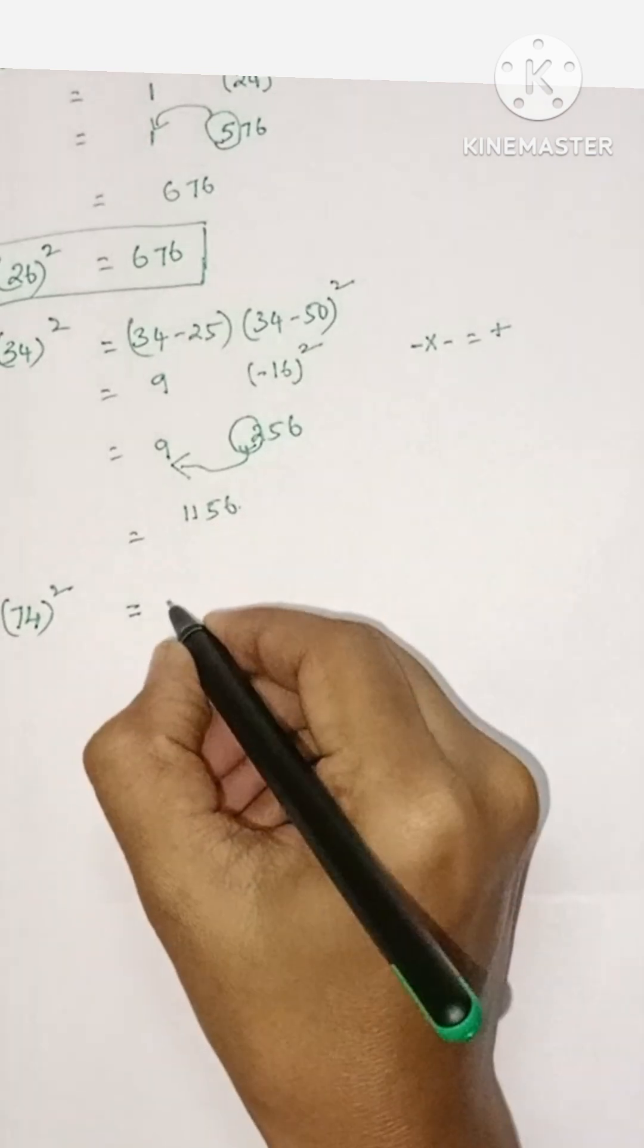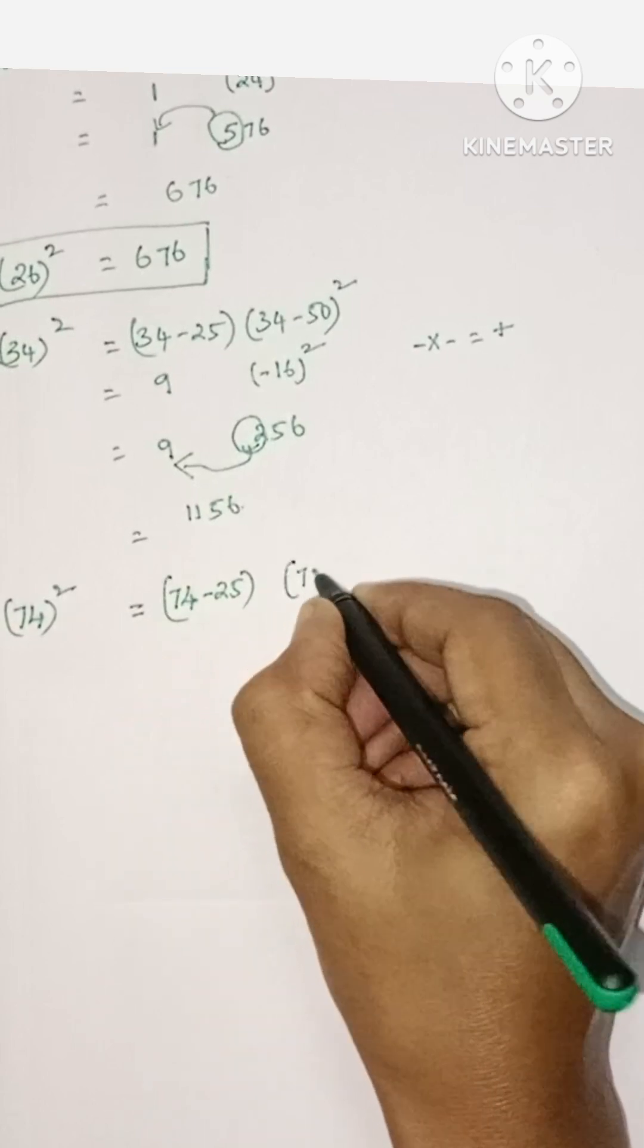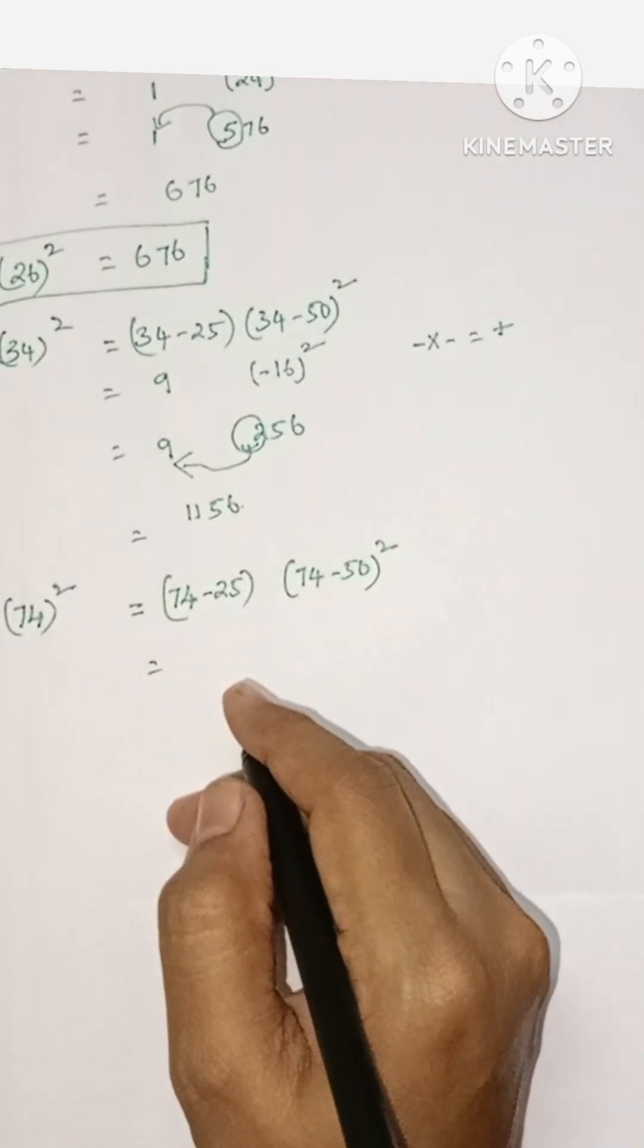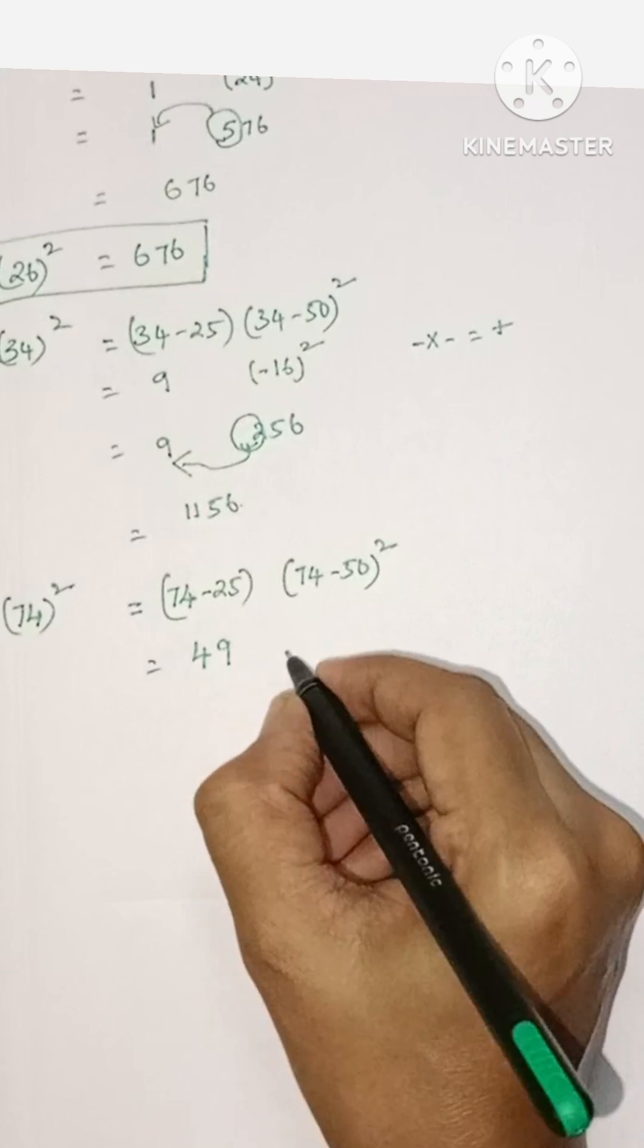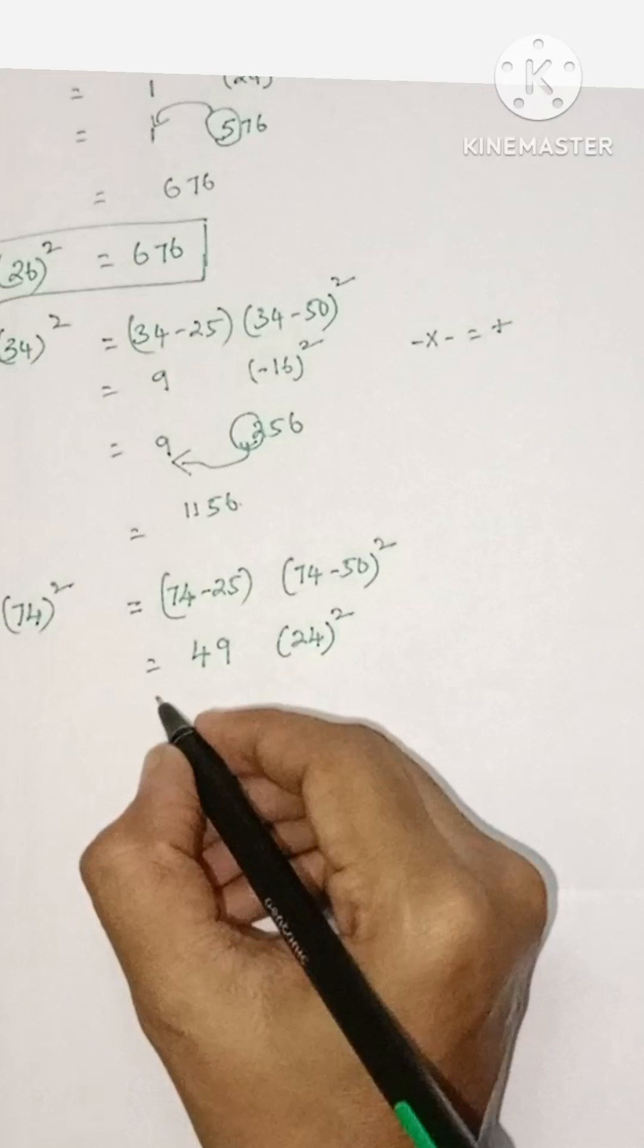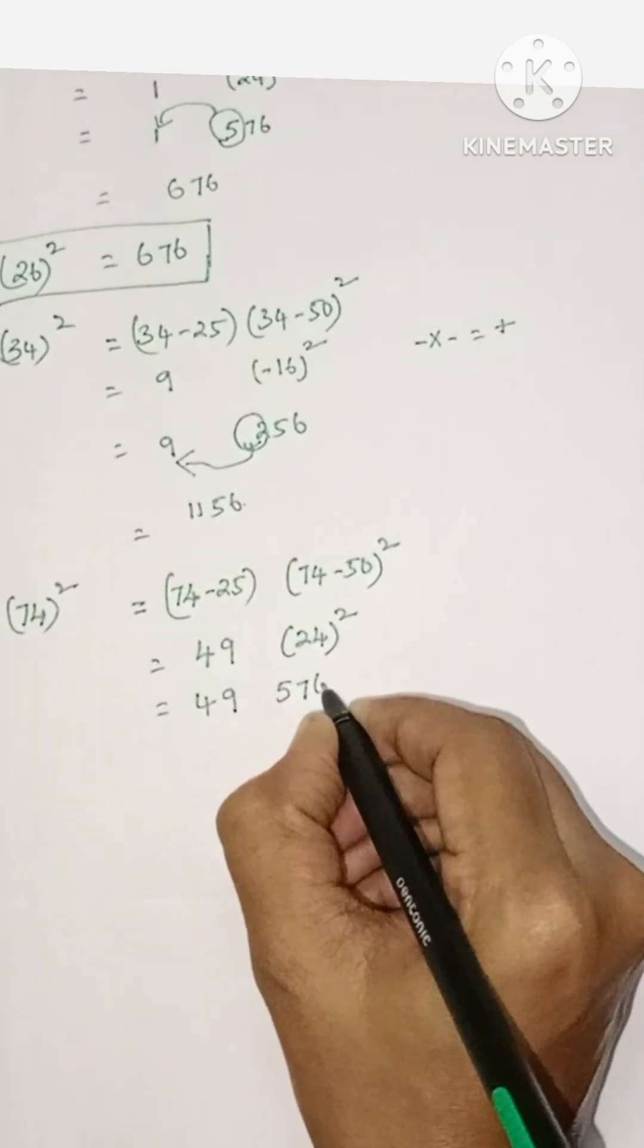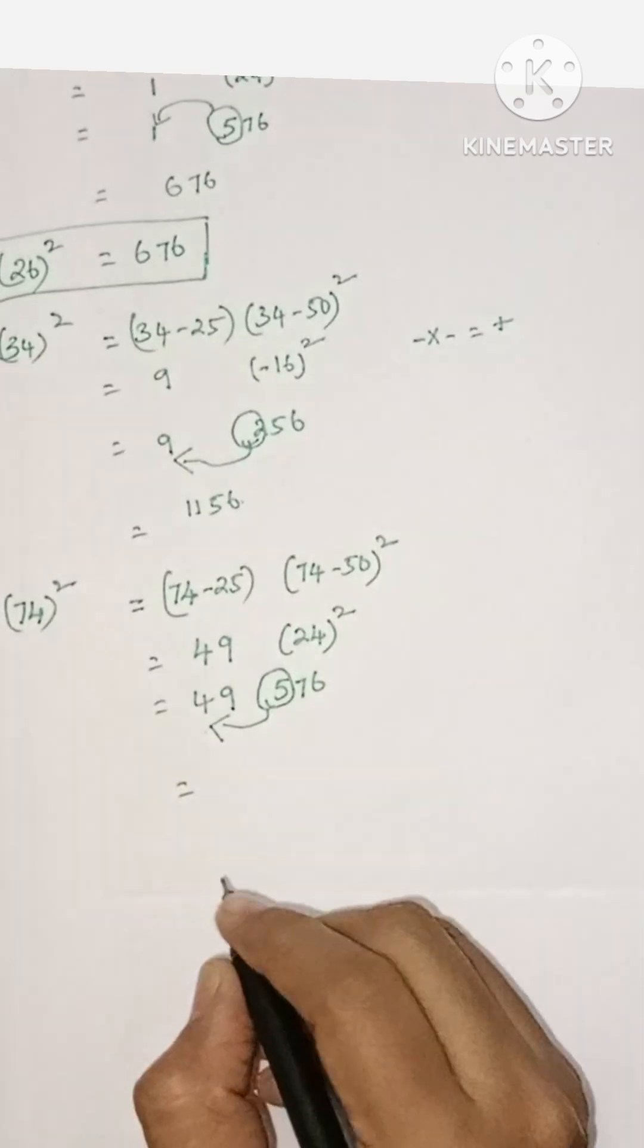So 49 square. 49 minus 25 is 24, and 49 minus 50 is negative 1, so 1 square. That is 24 and 1, so 24 and 1 becomes 24 01. 24 whole square is 576, so just add this number to part 1: 49 plus 5 is 54.